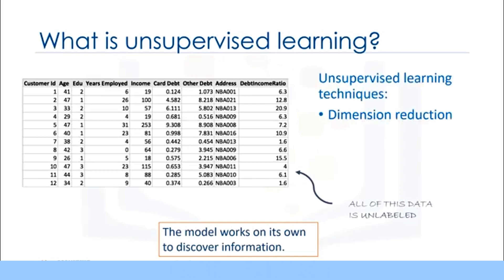Dimension reduction, density estimation, market basket analysis and clustering are the most widely used unsupervised machine learning techniques. Dimensionality reduction and feature selection play a large role in this by reducing redundant features to make the classification easier. Market basket analysis is a modeling technique based upon the theory that if you buy a certain group of items you're more likely to buy another group of items. Density estimation is a very simple concept that is mostly used to explore the data to find some structure within it.